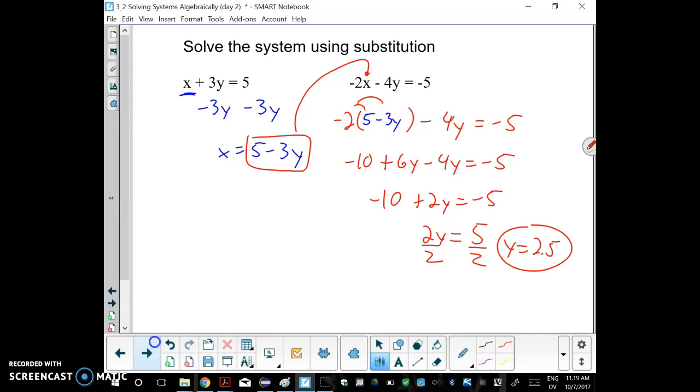Now we got to substitute to find x. To complete the question, you can use any equation you want, either the first two of the original ones, but it's actually easiest if you just go right back over here and put y right there because we have x equals, and then you just do 5 minus 3 times 2.5. So we get 5 minus 7.5, 3 times 2.5 is 7.5, and then 5 minus 7.5 is negative 2.5. So our solution is y positive 2.5, x negative 2.5.